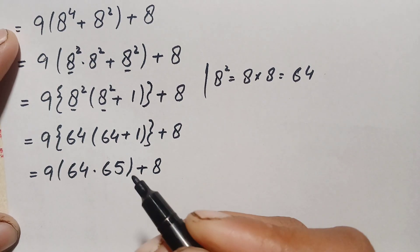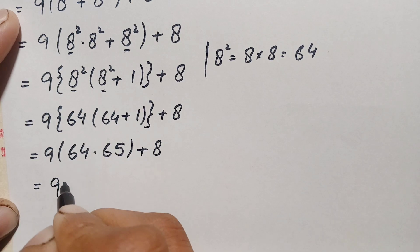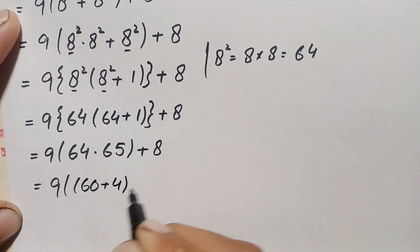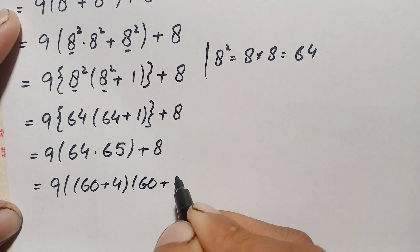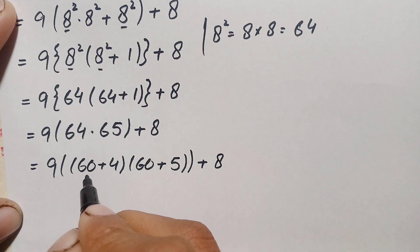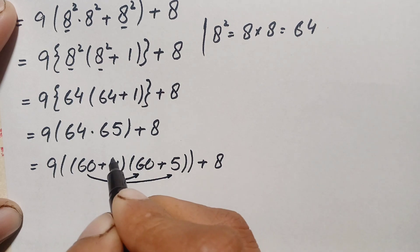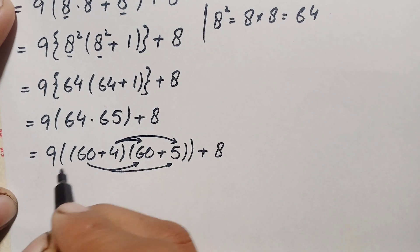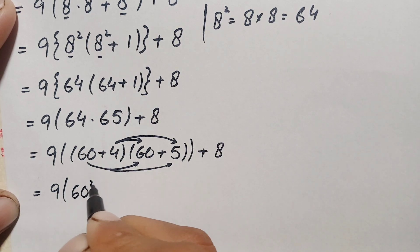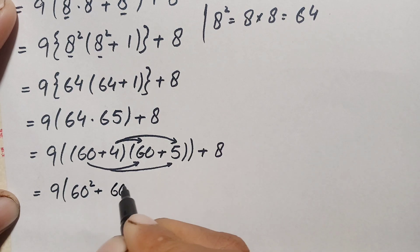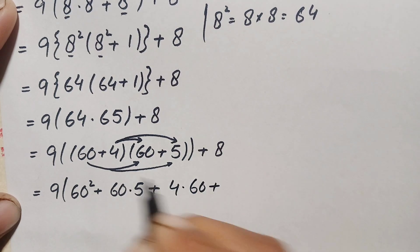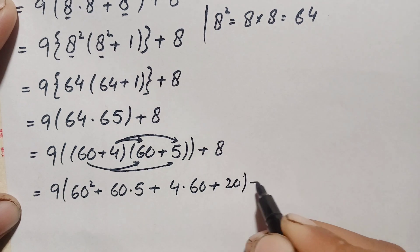Now we multiply these numbers without using a calculator. We write 64 as 60 plus 4 and 65 as 60 plus 5, then multiply using distribution. First 60 times 60, then 60 times 5, then 4 times 60, then 4 times 5. So we get: 60 squared plus 60 times 5 plus 4 times 60 plus 4 times 5, which gives 20, plus a.